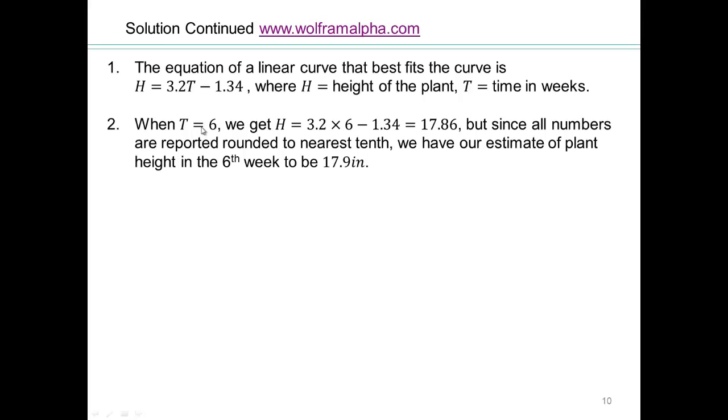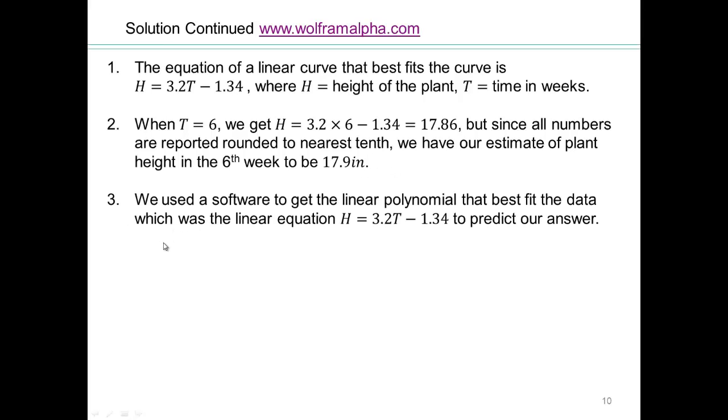Second question says, predict the height in the sixth week. So t is 6, so plug t equals 6. We got 17.86. But what's the unit here? So 17.86 we can't say, because all the data points were rounded to the nearest tenth. And so that means we will estimate our plant height to be 17.9 inches. And now the third question said, how did we do it? And so you would have to say, we used a software to get a linear polynomial that best fit the data, which was linear equation h equals 3.2t minus 1.34 to predict our answer.